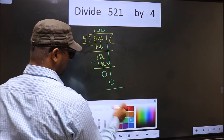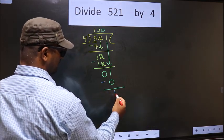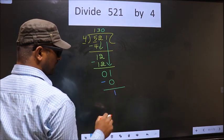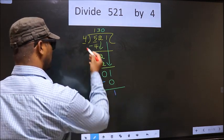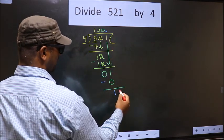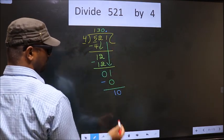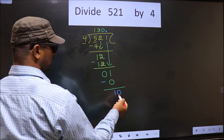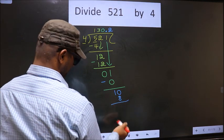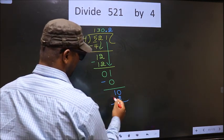Now you subtract: 1 minus 0 equals 1. Over here, we did not bring any number down, and 1 is smaller than 4. So now we put a decimal point and bring down 0.